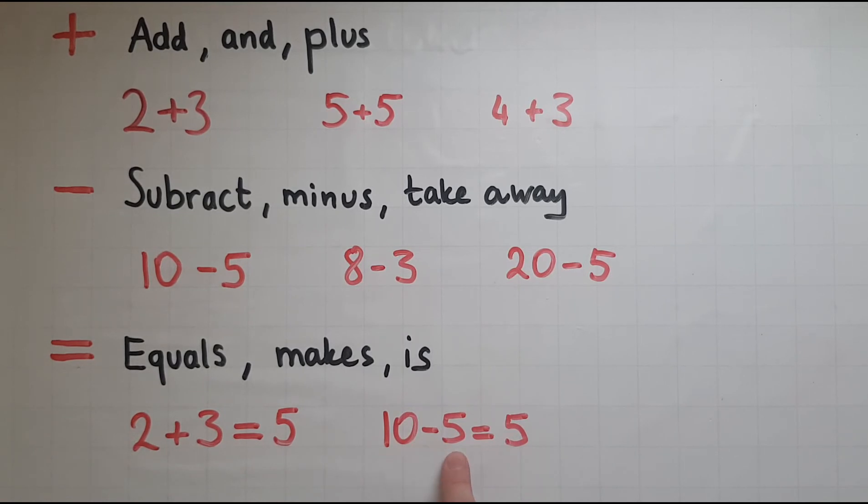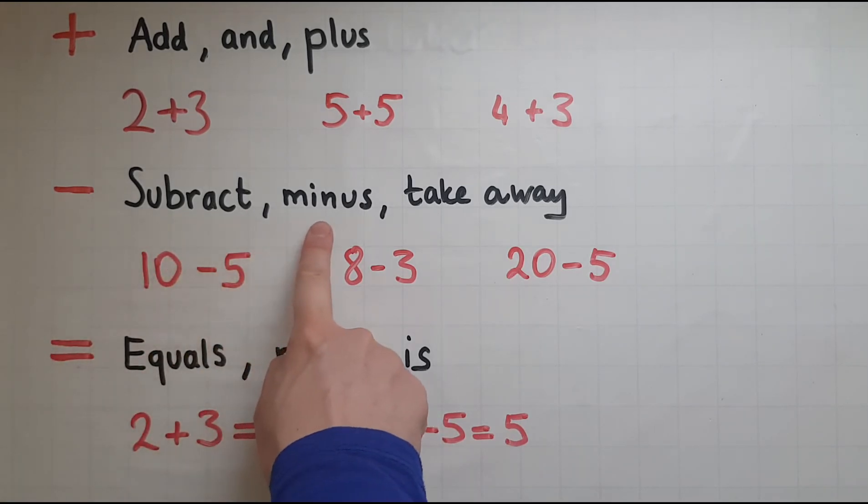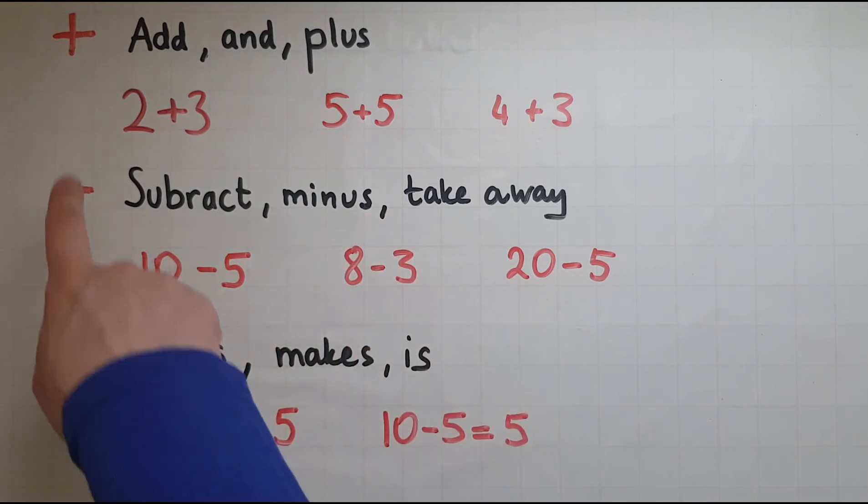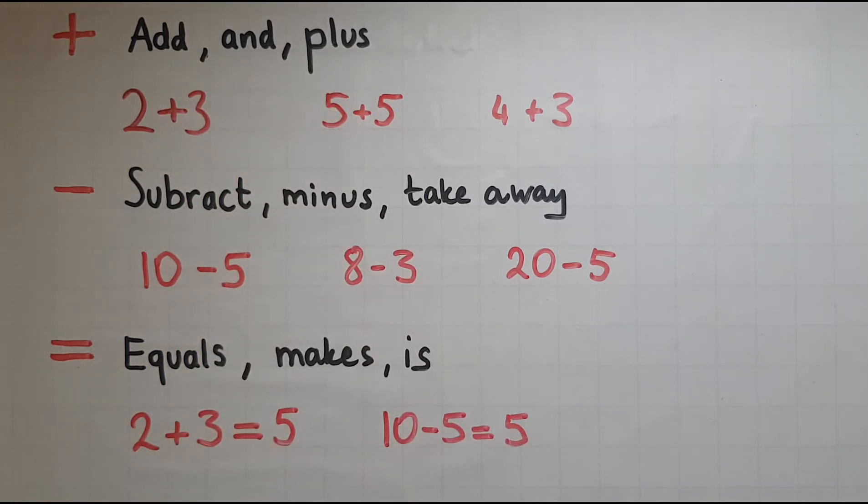10 take away 5 is 5. So these are words that mean the same thing. So this symbol means equals, makes or is. This symbol means subtract, minus or take away. This one means add, and or plus. So this is what they mean and this is how we use these symbols.